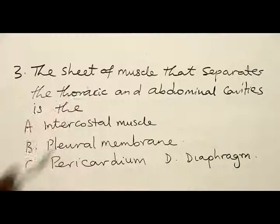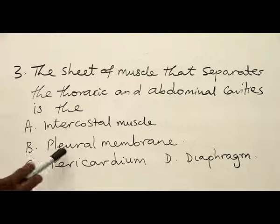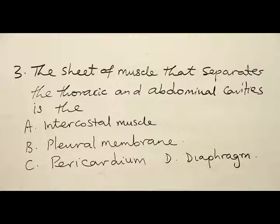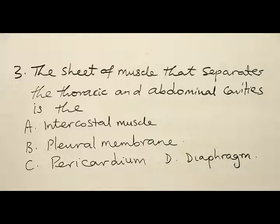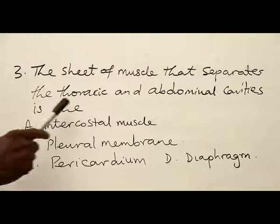Number three: the sheet of muscle that separates the thoracic and abdominal cavities is: A, intercostal muscle; B, pleural membrane; C, pericardium; and D, diaphragm. The intercostal muscle is a muscle that surrounds the ribs — the one that contracts for the ribs to move upward. The pleural membrane wraps the lungs and makes the thoracic cavity airtight for the lungs to function. The pericardium is a membrane that encloses the heart with fluid to reduce friction and protect the heart. Then D is the diaphragm, the one that separates the thoracic cavity from the abdominal cavity. So the answer to number three is D.